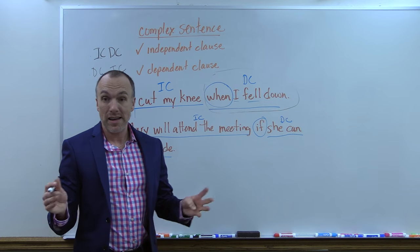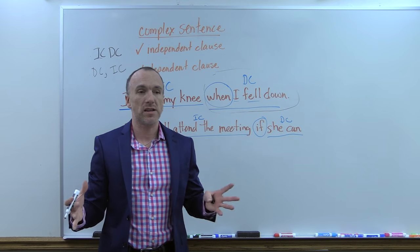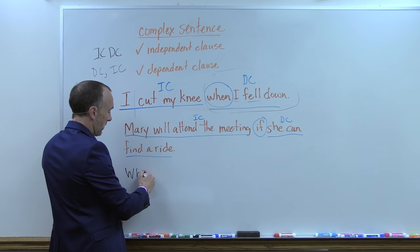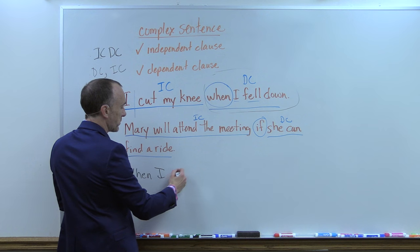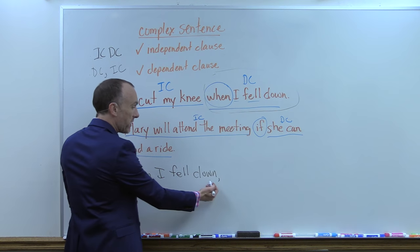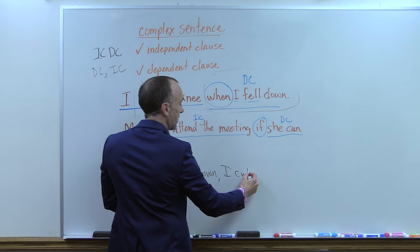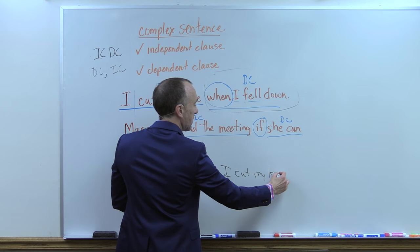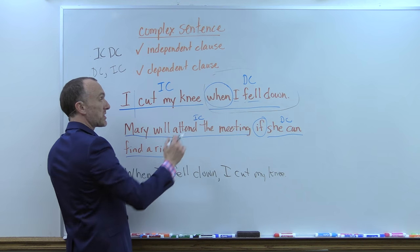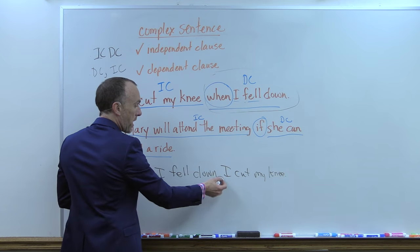You can see, hear, and know that the sentence makes sense either way — it does not matter. But if we write a sentence with the dependent clause first, we need to place a comma after the dependent clause. 'When I fell down' — there it is — now I'll put the independent clause: 'I cut my knee.' So this sentence is the same as the other; it's just the independent and dependent clauses are switched. But in this format, we need a comma.